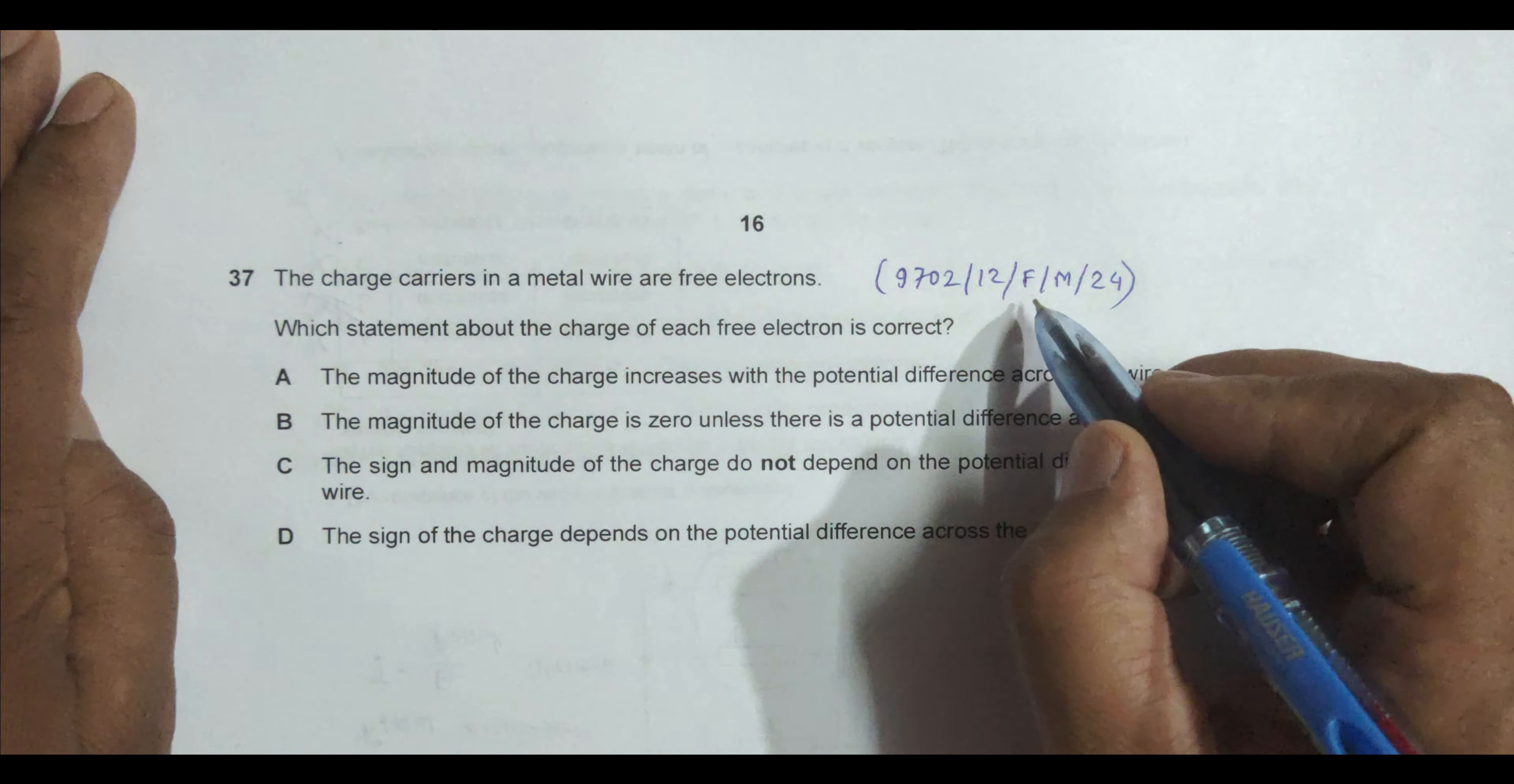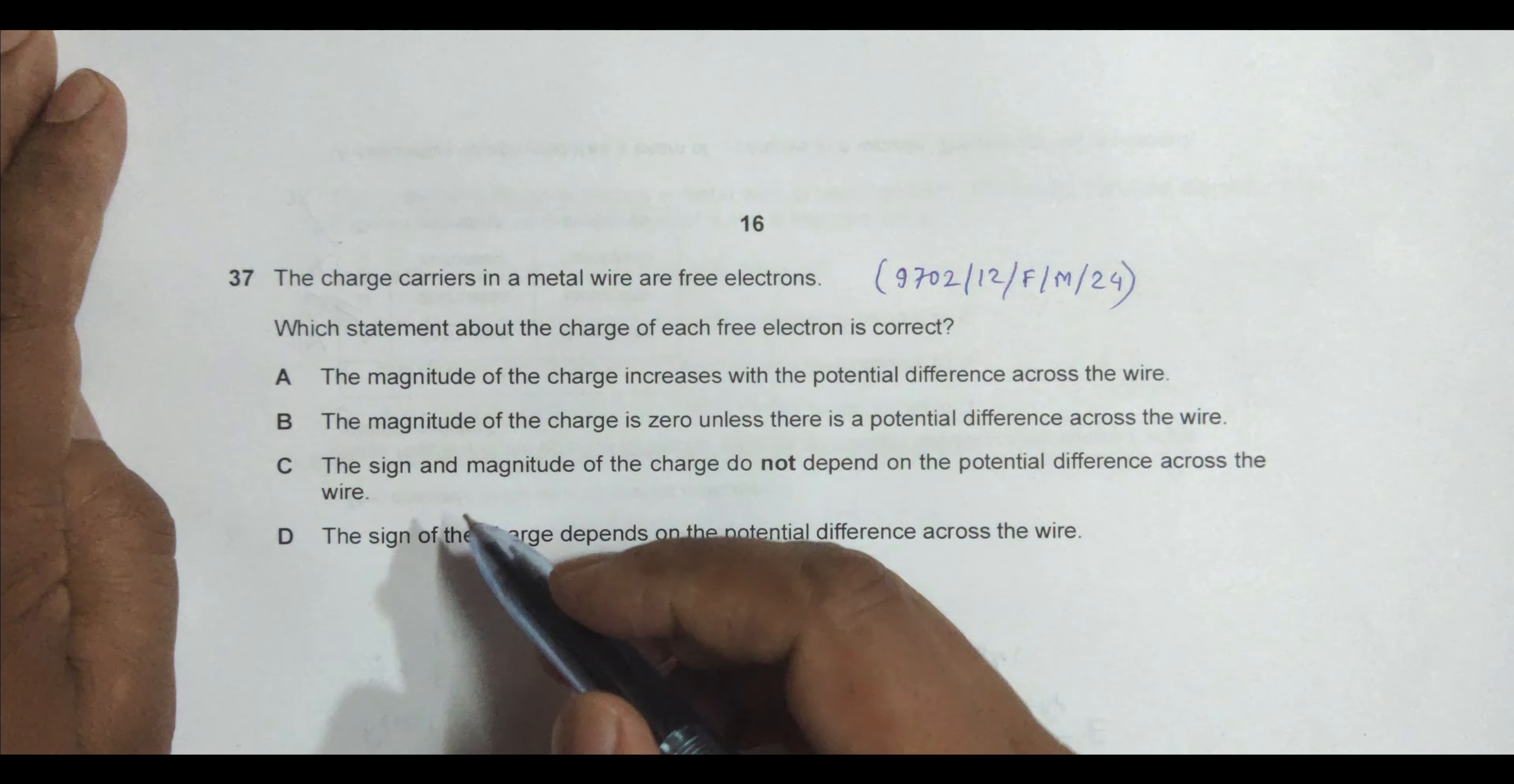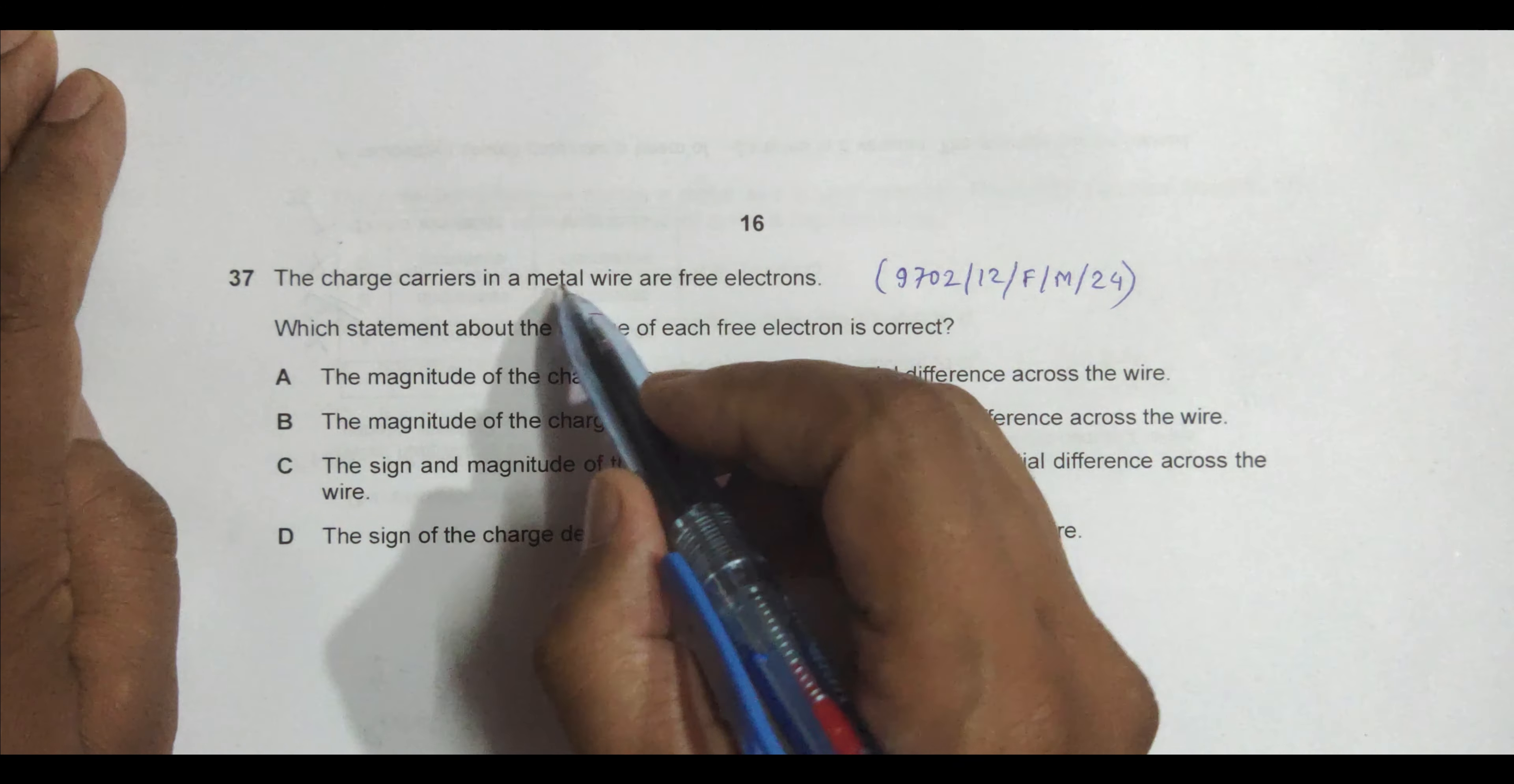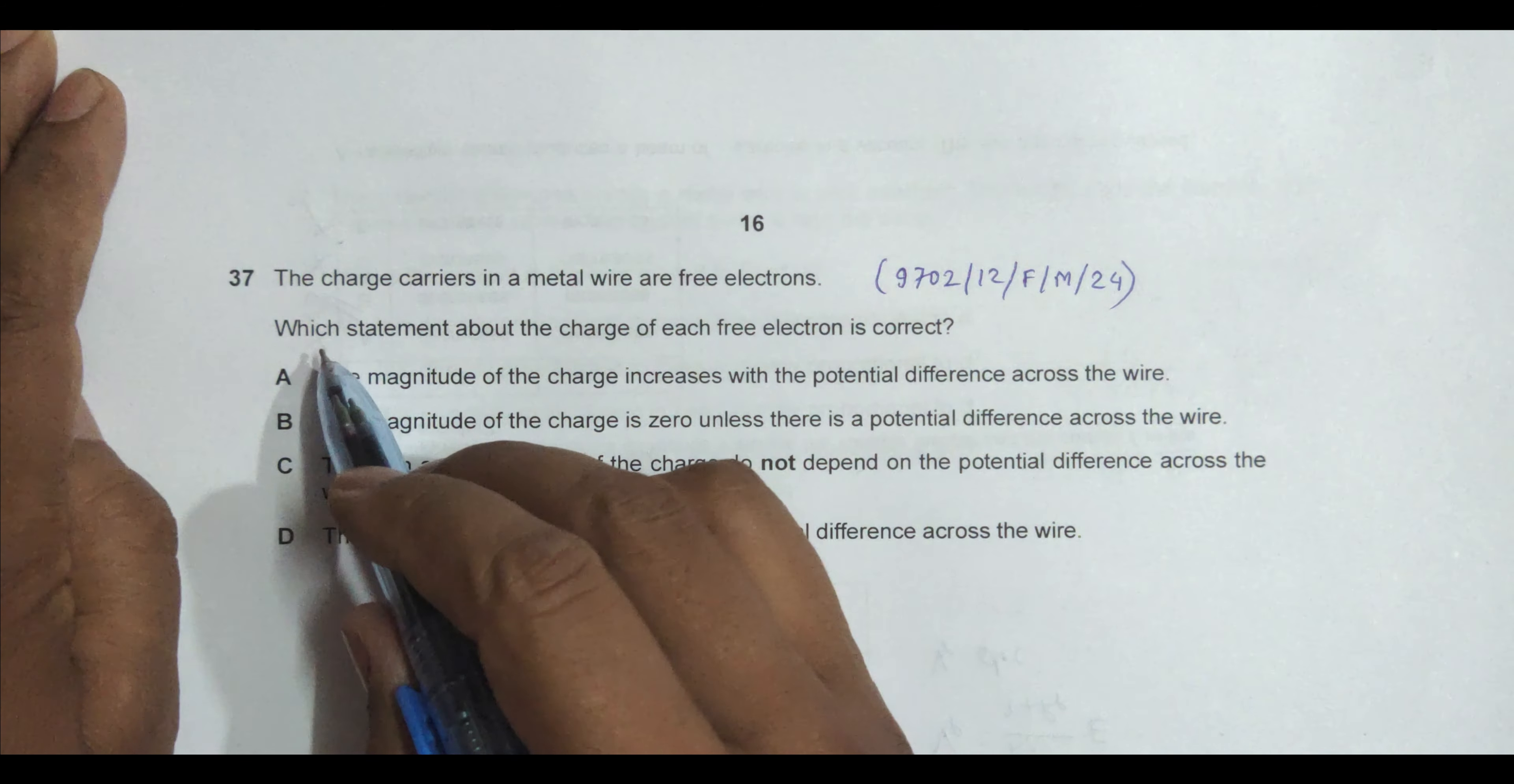Hello folks, this is 2024 February-March session paper 1-2 and the question number is 37. The question is concerned with the chapter of current electricity. It says the charge carriers in a metal wire are free electrons. Yes, of course, metal wires are good conductors. In metals they conduct by means of free electrons.